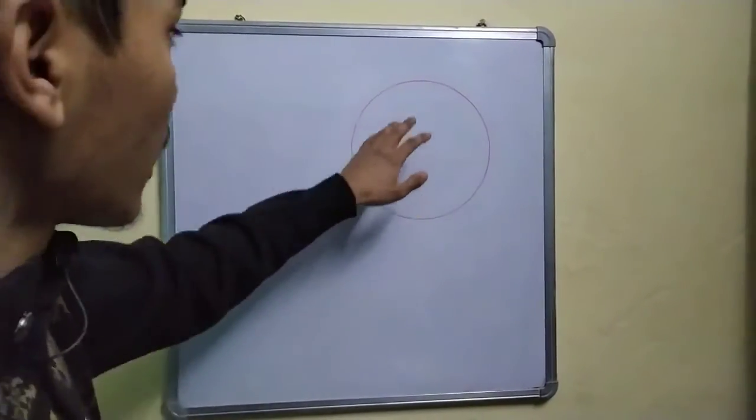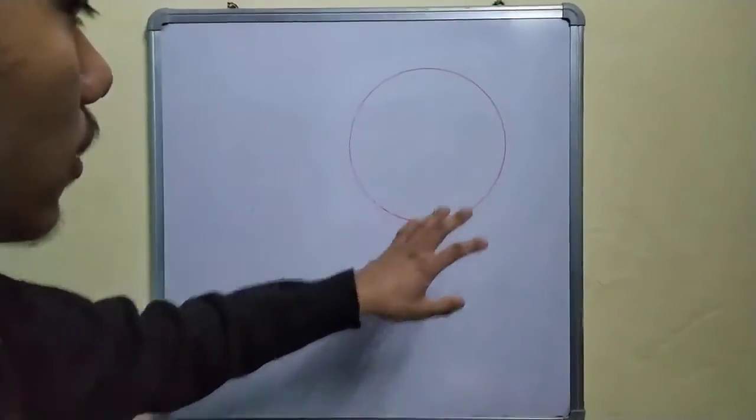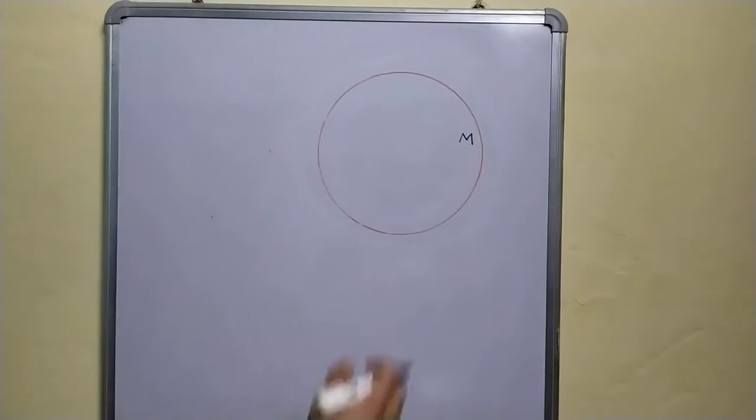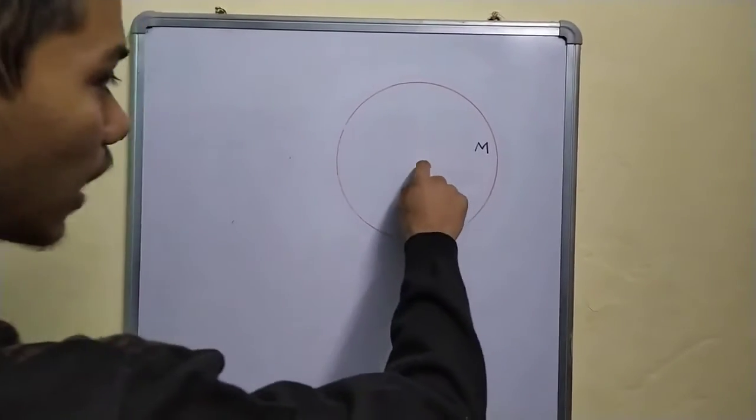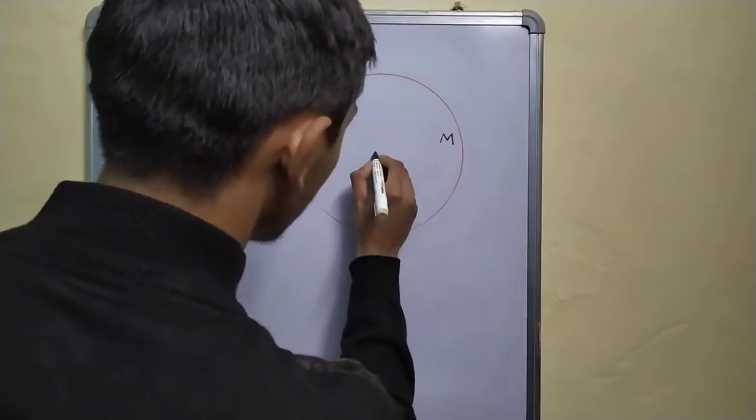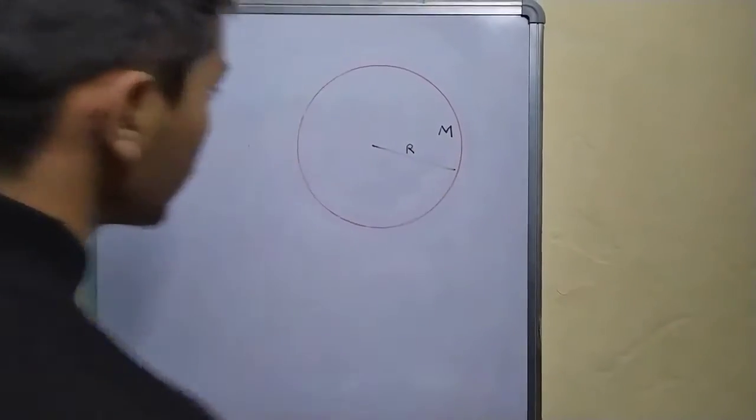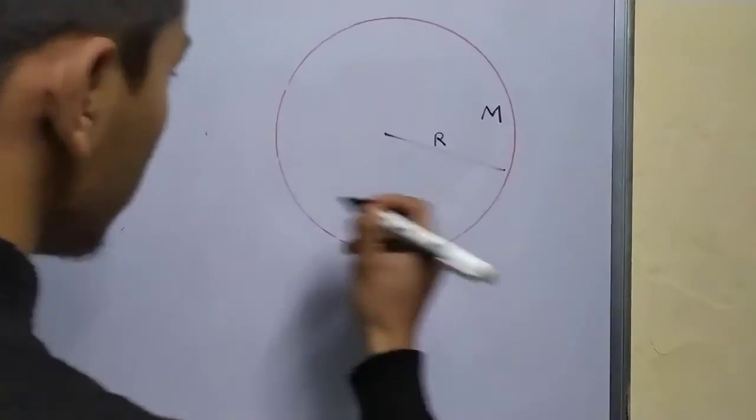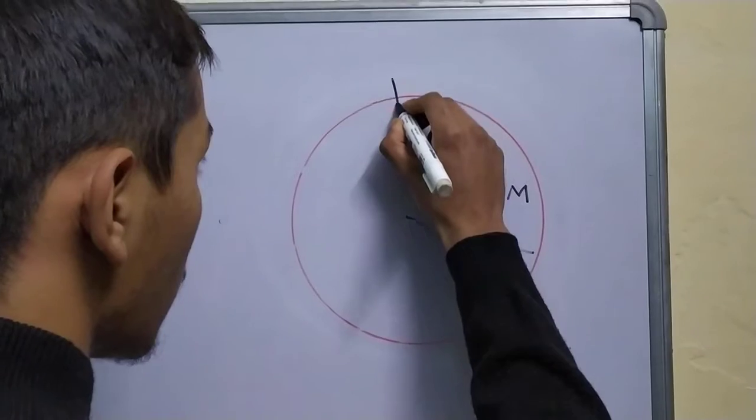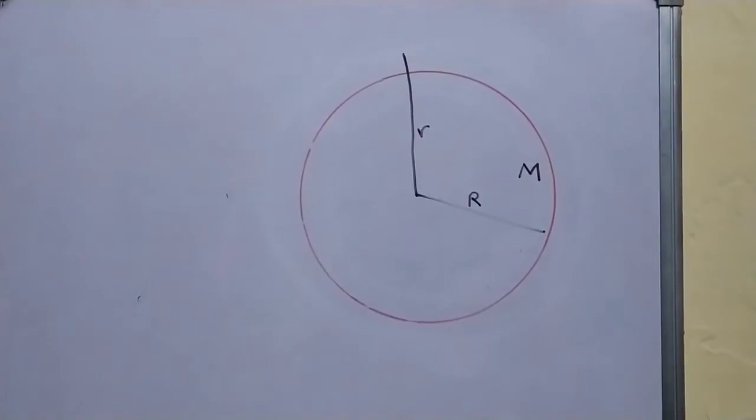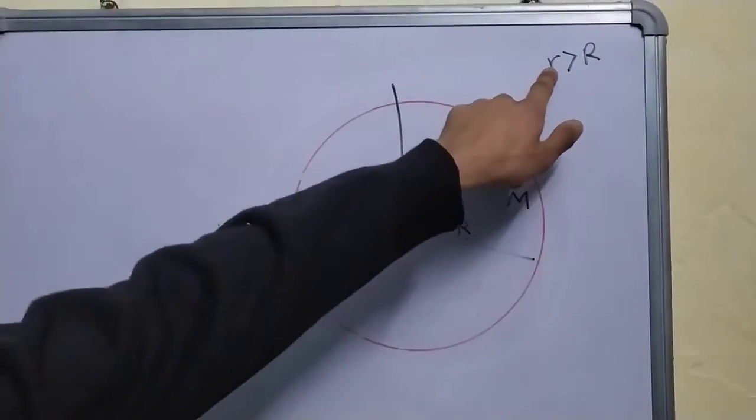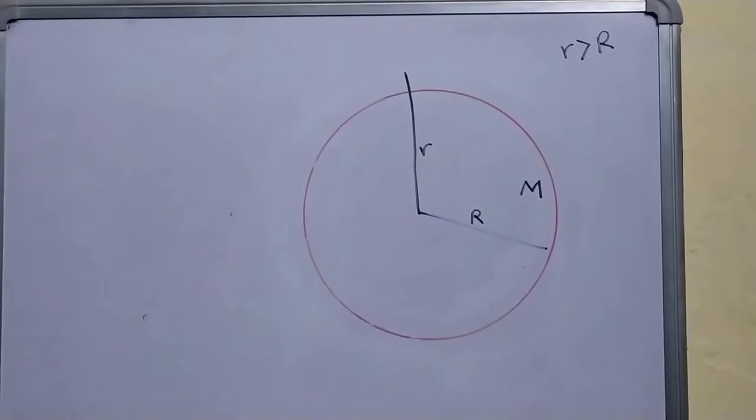The object we'll be considering is a spherically symmetric body with mass capital M. We need to calculate the gravitational field at a point outside the body. If this body has radius capital R, we'll calculate the field at a point at distance small r away from it, where r is greater than R. This means the point is outside the body.